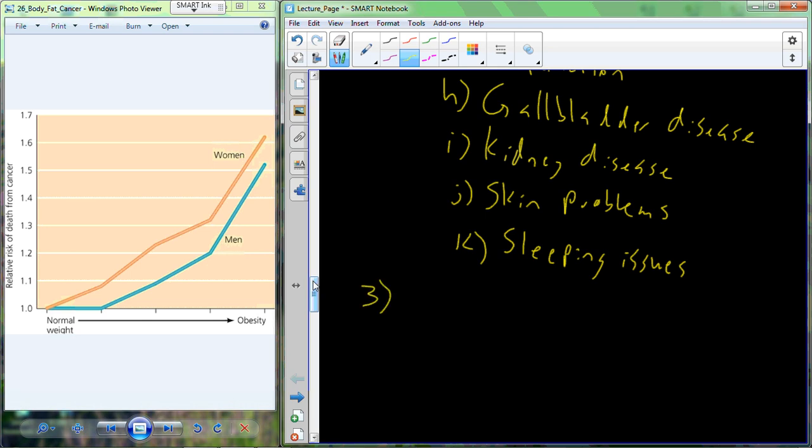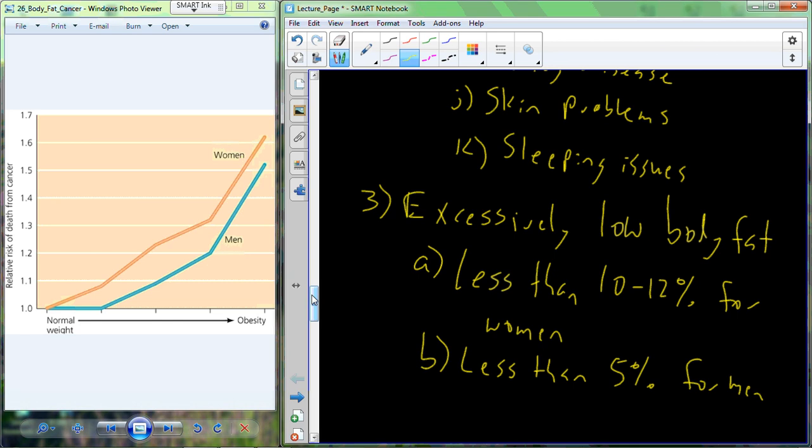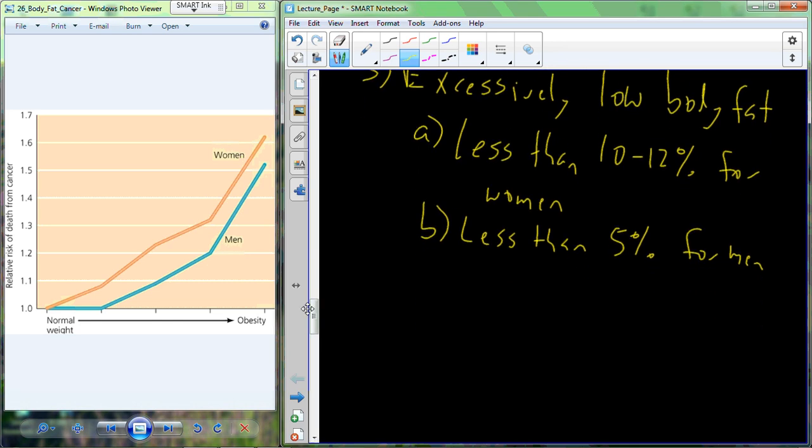But I also want to talk about individuals who are on the opposite side of the spectrum and have excessively low body fat. So these are going to be individuals that have body fat levels that are lower than the required essential fat levels. So for women less than 10 to 12% of the total body mass attributed to fat, and for men this will be less than 5%. So we're talking about for women as they get closer to more like 6 to 5% body fat, and for men closer to 2% body fat. So even on this low side there's also some associated issues and concerns.